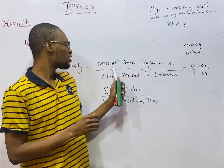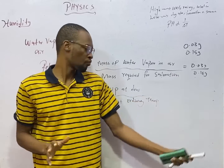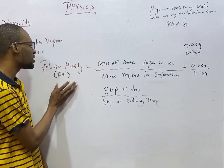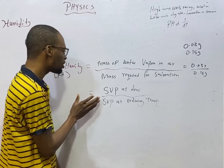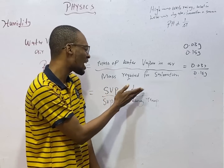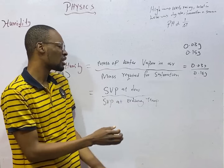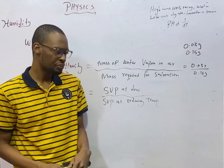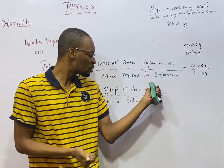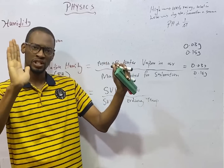Relative humidity does not have a unit because we are comparing the same thing. Another formula to calculate relative humidity is: relative humidity equals saturated vapor pressure at dew point over saturated vapor pressure at ordinary temperature. Dew point is the temperature and pressure at which the water vapor in air is just enough to saturate it.